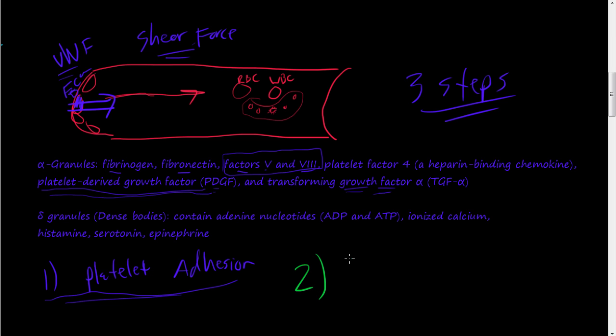The second step is secretion, and that's where these come in. These alpha granules and these gamma granules is they release these factors, these certain types of factors that are involved in the cascade. And we've already talked about how thrombin converts fibrinogen to fibrin,